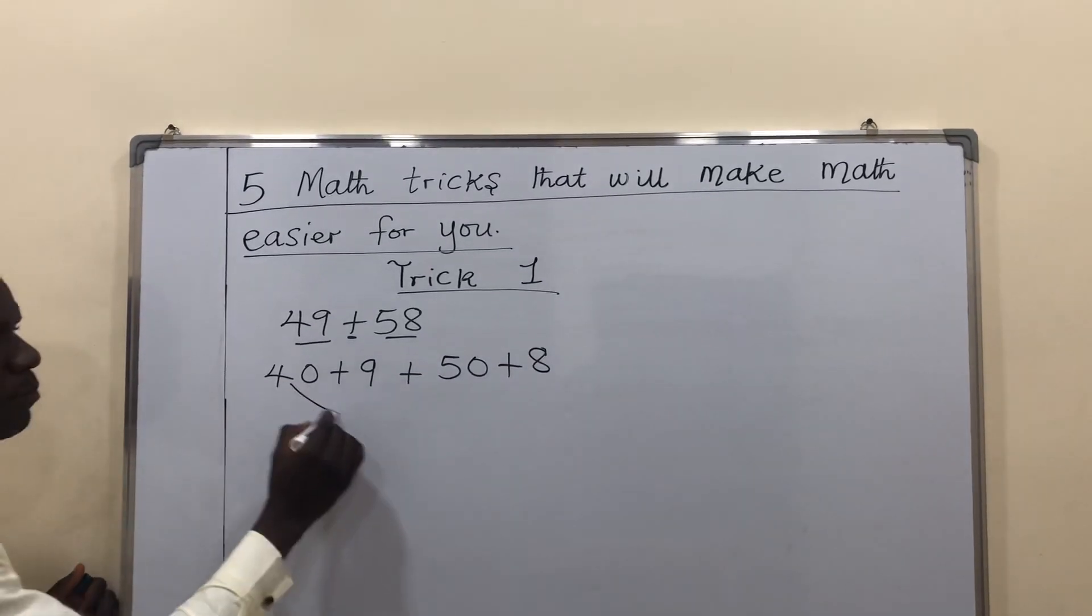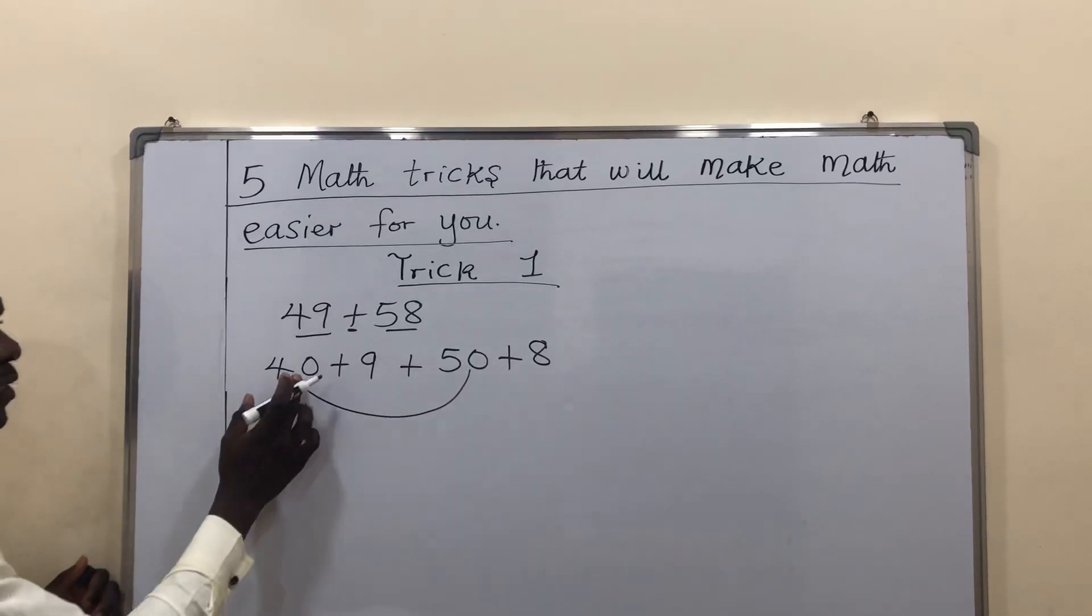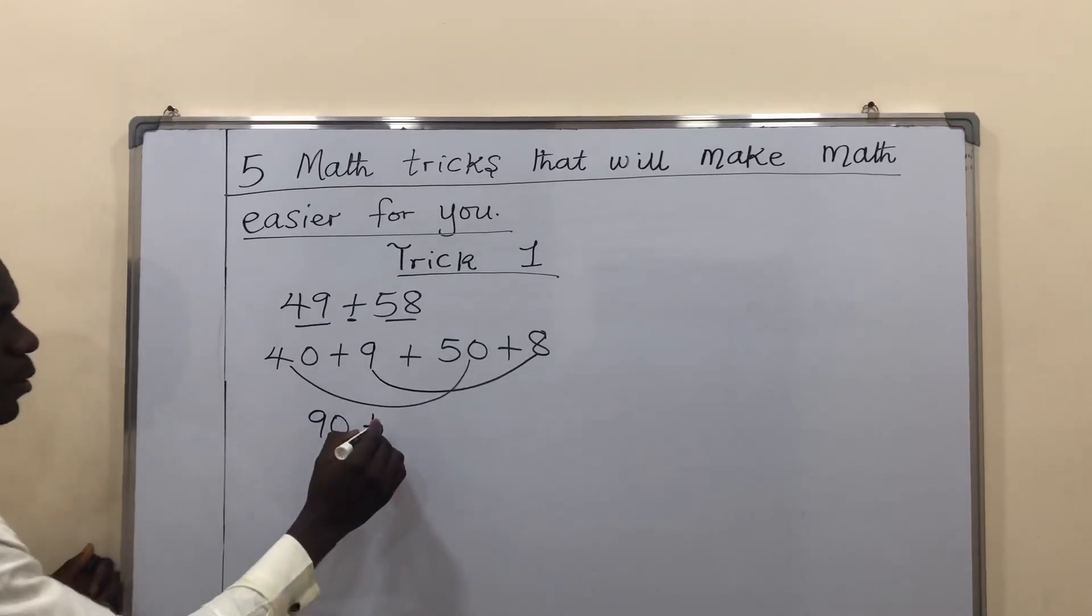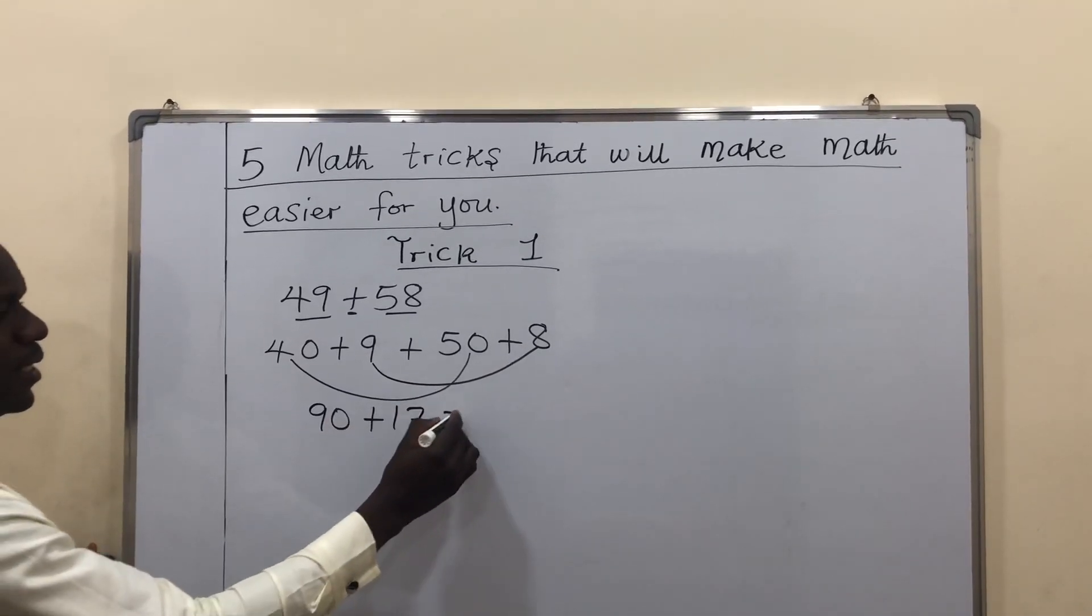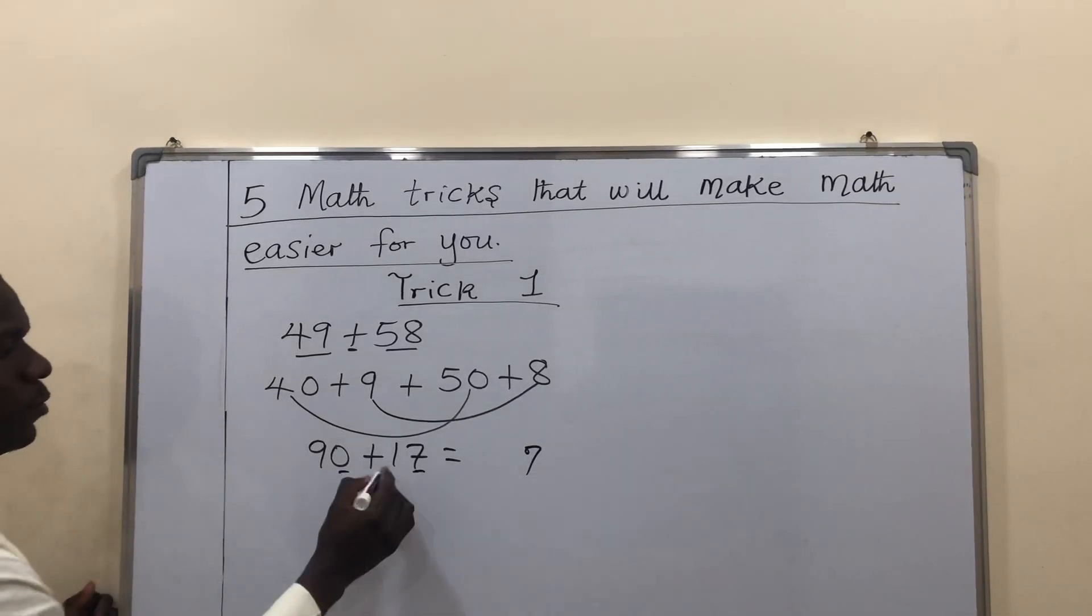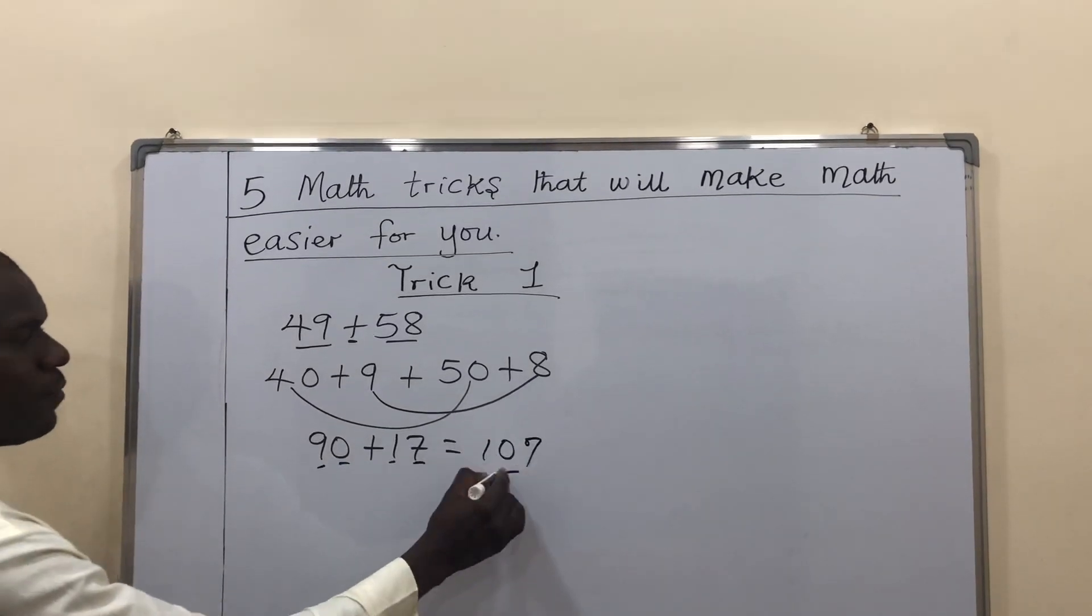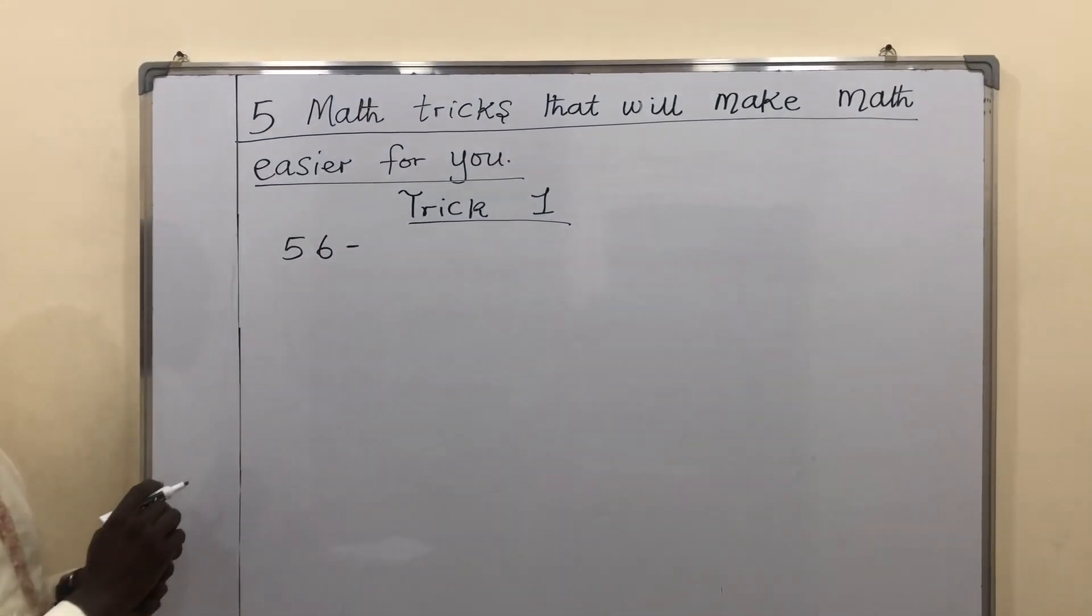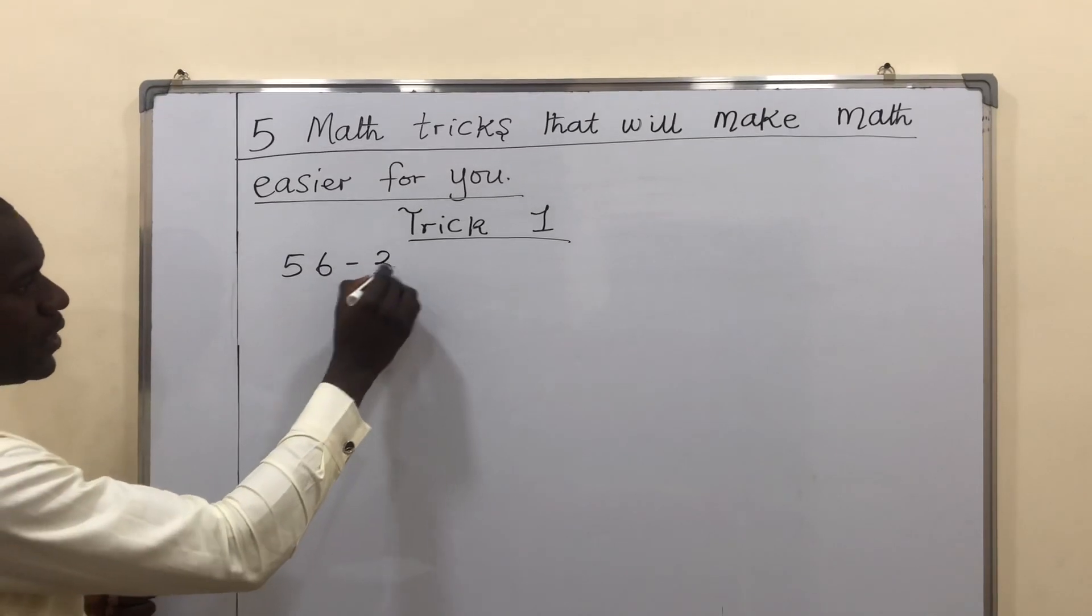At this point, add the bigger numbers which are tens numbers. 40 plus 50 is 90. Plus, you can add the smaller numbers. 9 plus 8 is 17. Now, 7 units plus 7 plus 0 is 7. 1 plus 9 is 10. You have your answer.